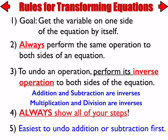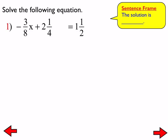Let's have everybody try number one: negative 3 eighths x plus 2 and 1 fourth equals 1 and 1 half. Once you get your solution, please check to make sure it is what you claim it to be. When I walked around, the two most common answers I saw — in almost every paper — were either x equals 2 or x equals negative 2. If you had checked like you were supposed to, you would realize why one of those is not right.